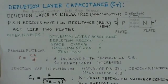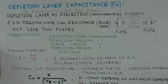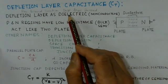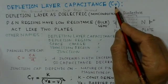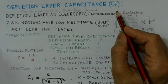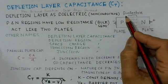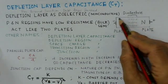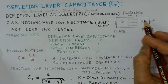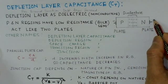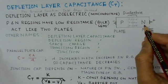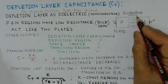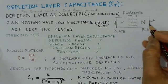So here we will start with the depletion layer capacitance. Sometimes we call it CT, the transition capacitance. And this capacitance happens when the junction is reverse biased. So this is a PN junction and N is put to positive battery terminal and P to negative. The junction is reverse biased and this is the depletion region in the junction.